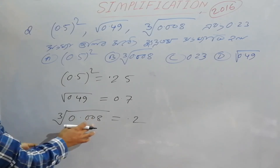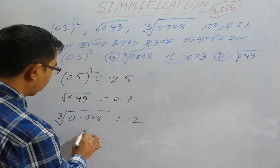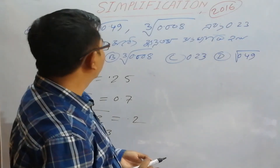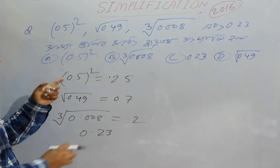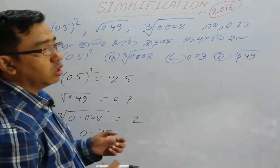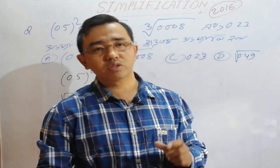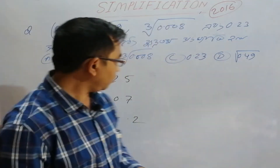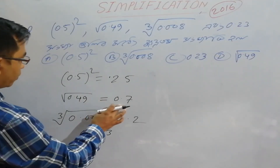Working through the calculation, we get 0.23. Using the trick for simplifying these decimal roots: square root of 0.25 is 0.5, square root of 0.49 is 0.7, and cube root of 0.008 is 0.2.